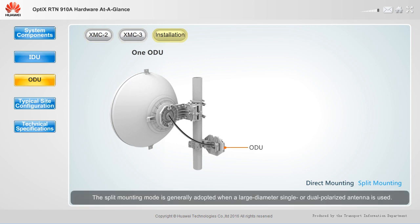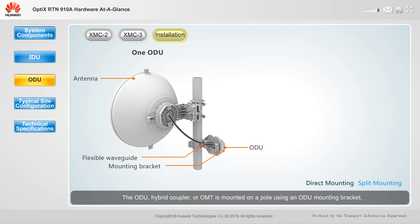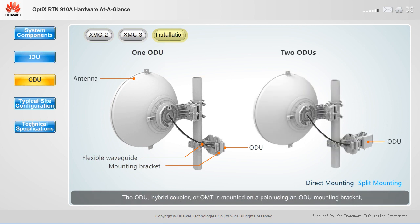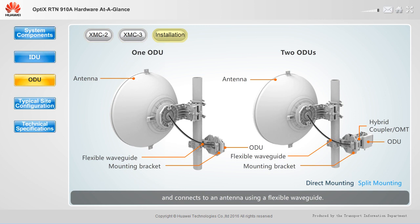The split mounting mode is generally adopted when a large diameter, single or dual polarized antenna is used. The ODU, hybrid coupler, or OMT is mounted on a pole using an ODU mounting bracket, and connects to an antenna using a flexible waveguide.